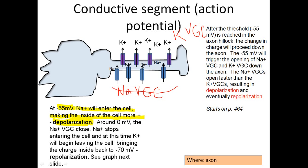That increase in positive charge inside the cell is called depolarization. Around zero millivolts, the sodium voltage-gated channels close and sodium stops entering. Then potassium starts leaving the cell, which brings the charge inside back to negative 70 millivolts — and that is repolarization.